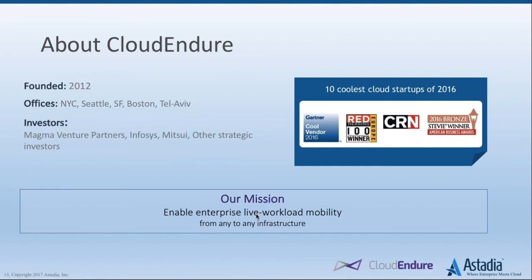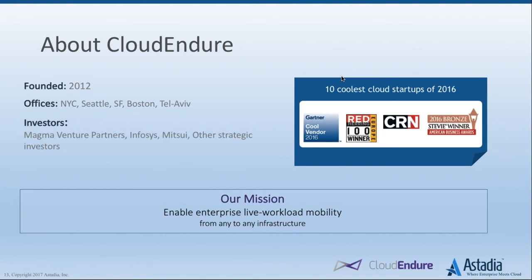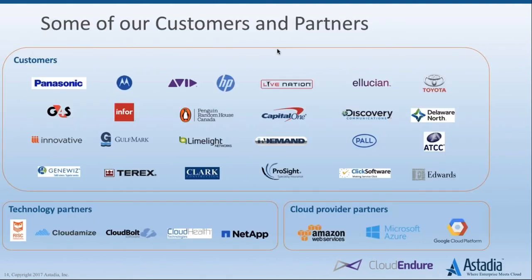CloudEndure is a technology company — an independent software vendor — focused on enterprise workload mobility. Specifically, Enterprise Live Workload Mobility: we help customers take live running application workloads from any source infrastructure — physical data centers, virtual data centers, cloud-based infrastructure — and replicate them without disruption, spinning them up in the target location of your choice. Any-to-any workload mobility. The company was founded in 2012 with offices across North America and global headquarters and R&D in Tel Aviv.